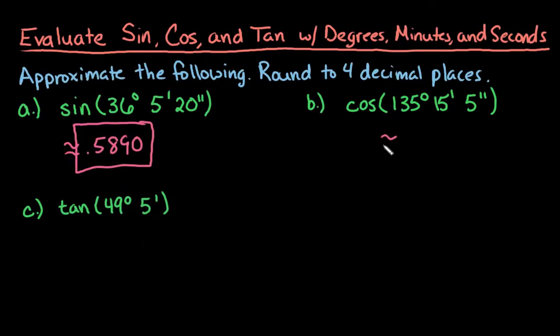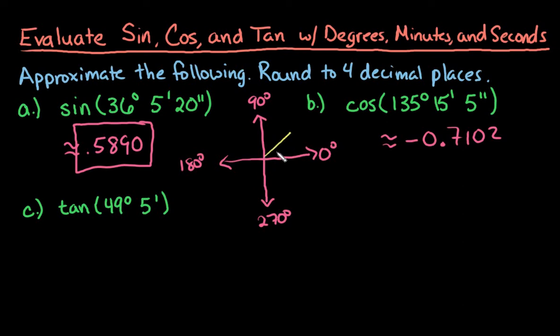And the reason that this one is negative is if you remember from drawing out your sine, cosine, tangent, when you're dealing with your coordinate plane, remember that we start with zero degrees and then 90 degrees, 180 degrees, and then 270 degrees. So our first one, the 36 degrees, fell in quadrant one. So our first one fell in quadrant one because it was the 36 degrees, five minutes, 20 seconds. So that's why we had a positive answer.